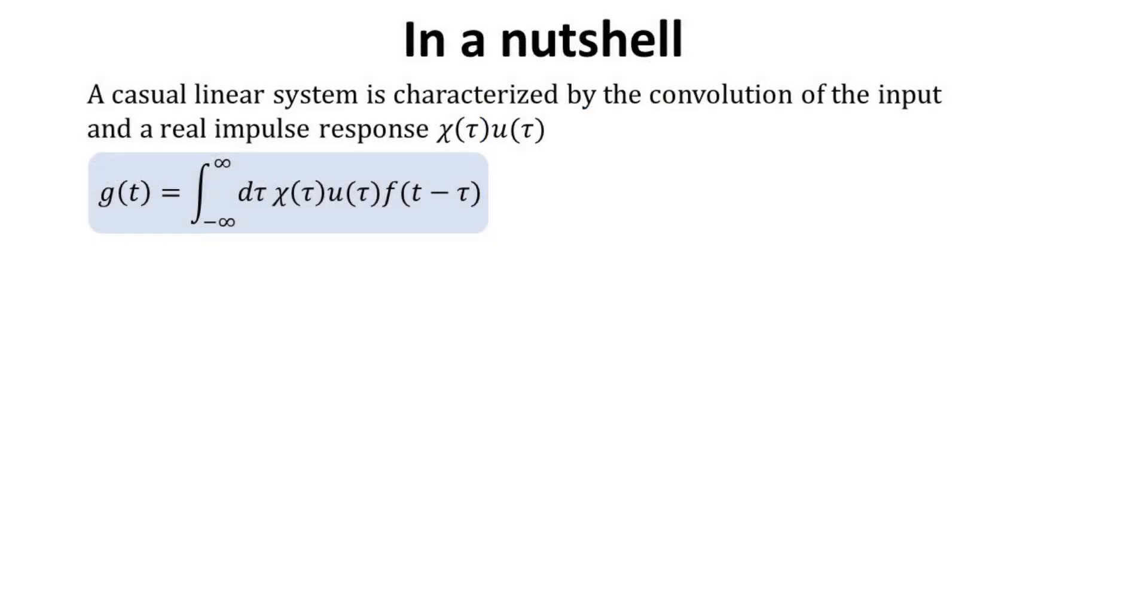Let me first spell out the key conceptual ideas we will discuss in this video. First, we review the well-known convolution formula that describes a causal linear system, where the output Gt can be constructed by the convolution of the input function and the impulse response of the system. We will explain why such convolution formula indeed respect linearity, causality, and time invariance.